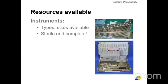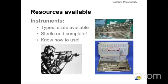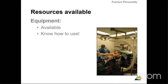When you decide to treat a fracture, you should take into consideration the available resources that you have: types, sizes, availability, whether they are sterile, and whether they are complete or not. Do not go to operate if you are not familiar with some resources or a technique. The equipment available must be usable — for example, you need a C-arm to do nailing, and you have to have a C-arm available.